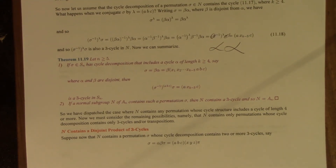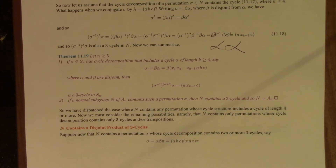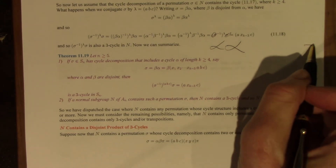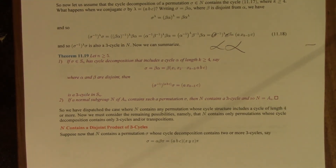So let's summarize: if sigma in S_n has a cycle decomposition that includes a cycle alpha of length k ≥ 4, then the permutation sigma inverse conjugated by lambda times sigma is a 3-cycle. So if a normal subgroup N of A_n contains such a permutation, then it contains a 3-cycle, and so it's all of A_n. We have dispatched the case where N contains any permutation whose cycle structure includes a cycle of length 4 or more — from that point we can produce a 3-cycle, and therefore N must be all of A_n.